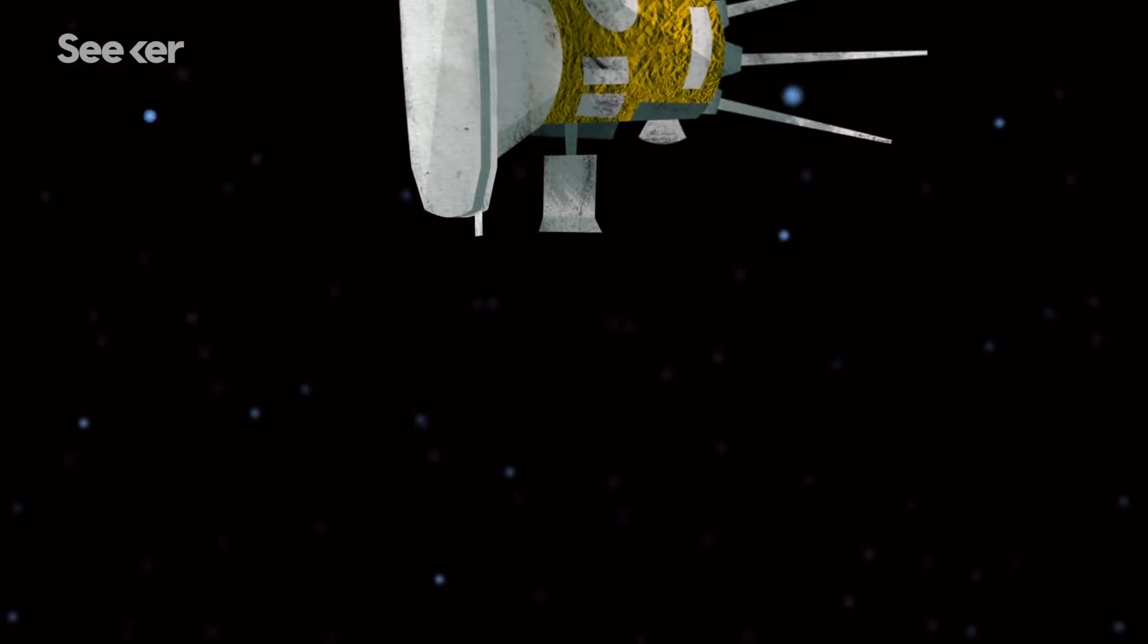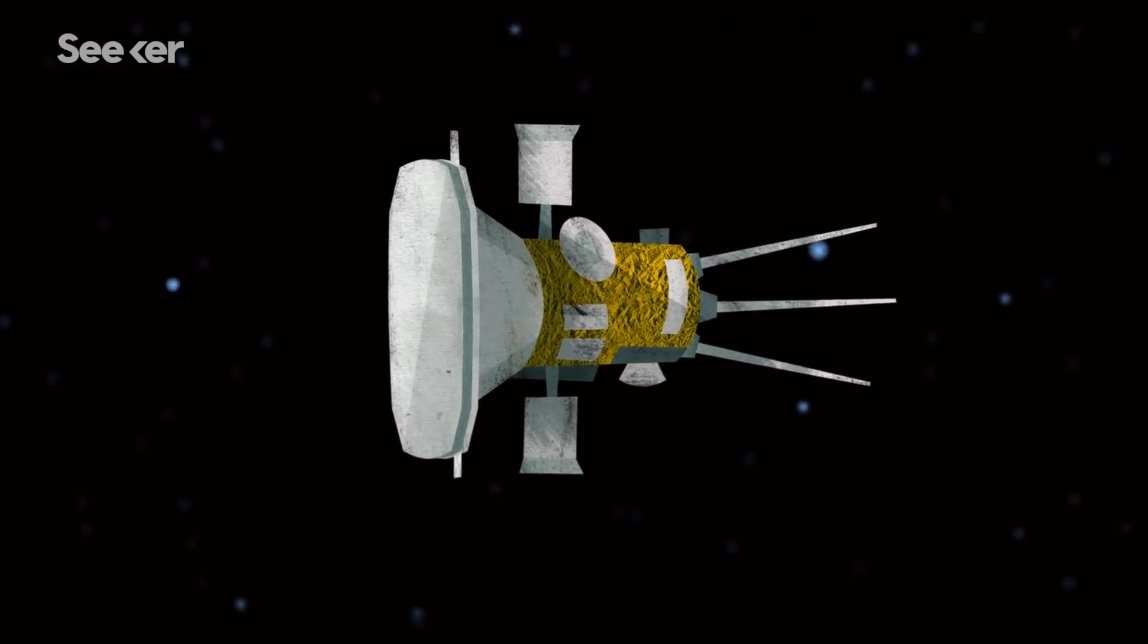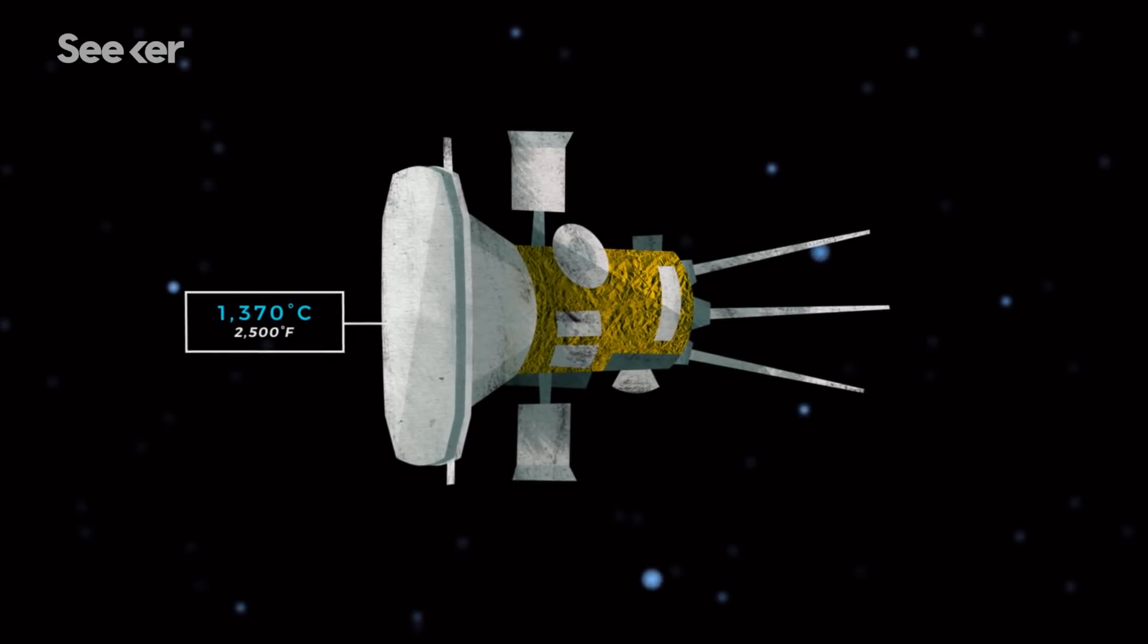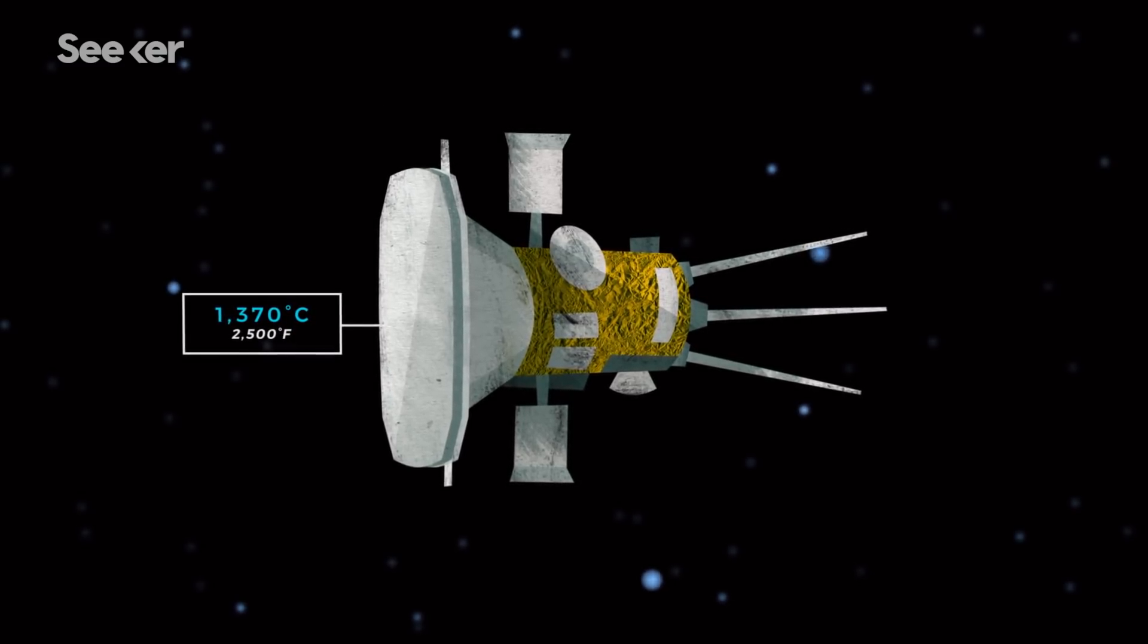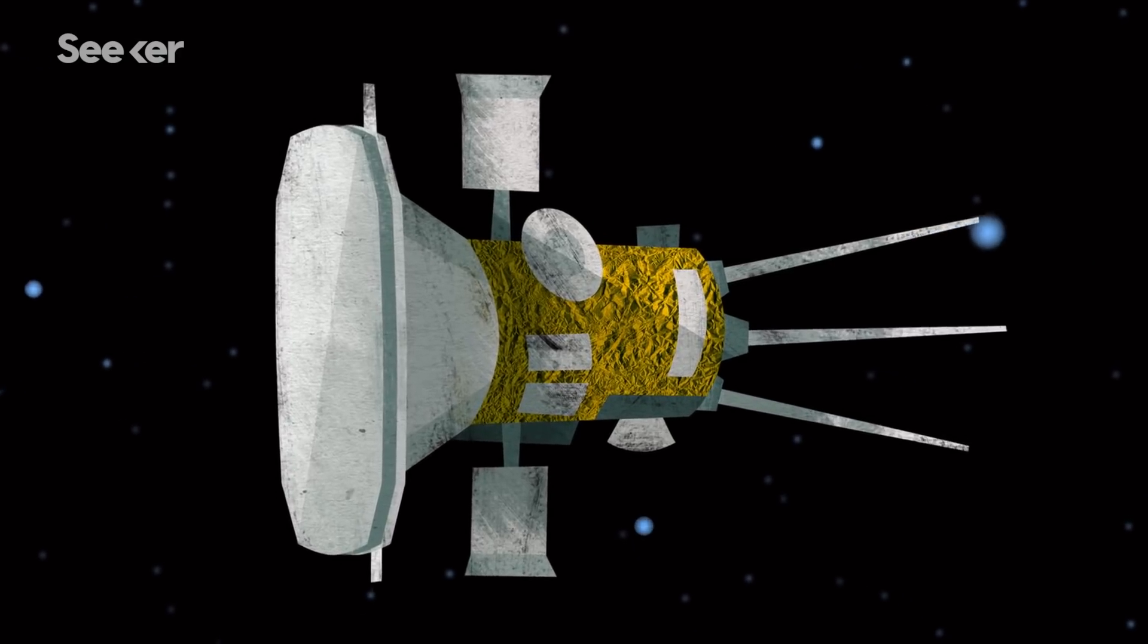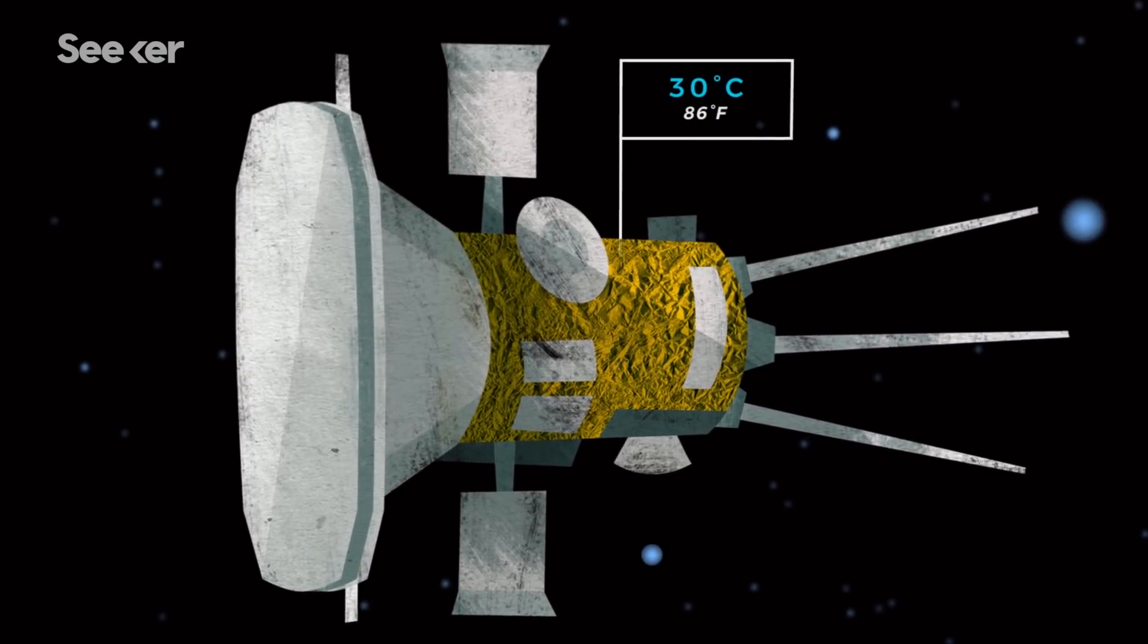The TPS will enable the front of the shield to withstand temperatures as high as 1,370 degrees Celsius, while the inside of the probe remains at the comfortable heat of a summer day, about 30 degrees Celsius.